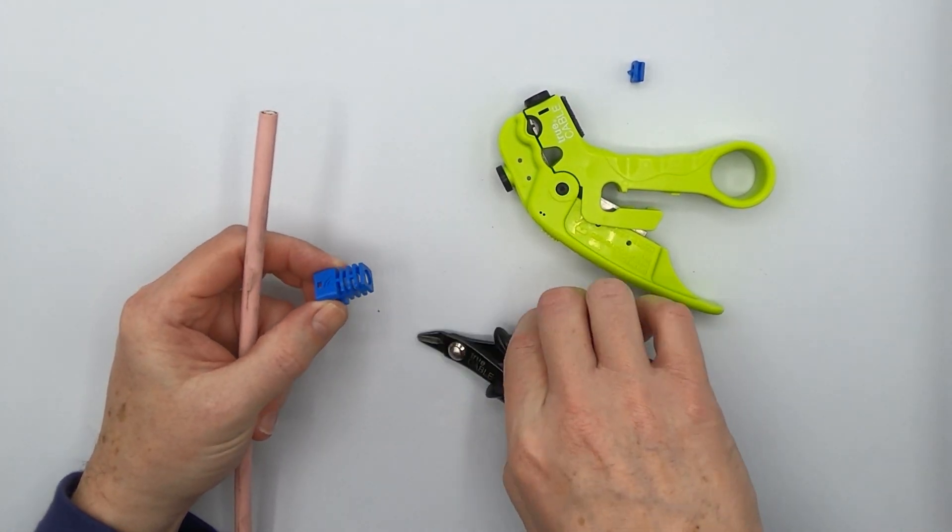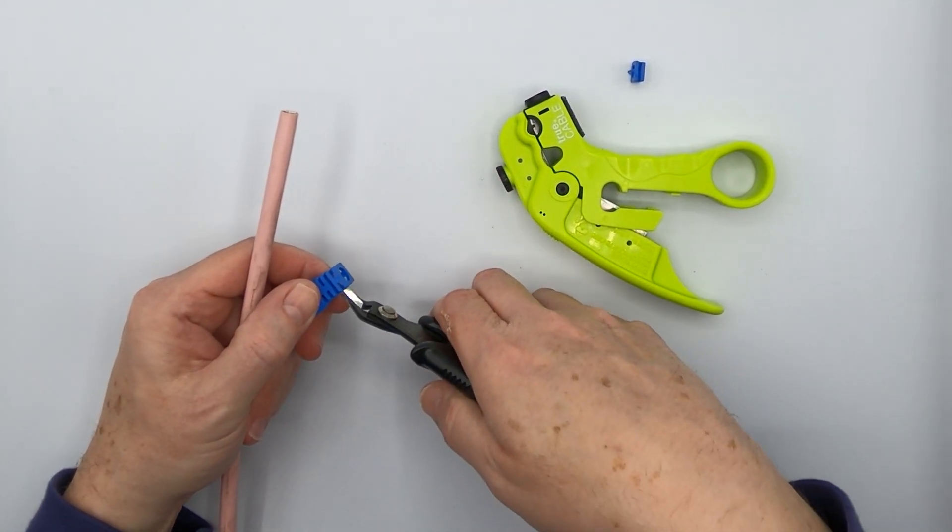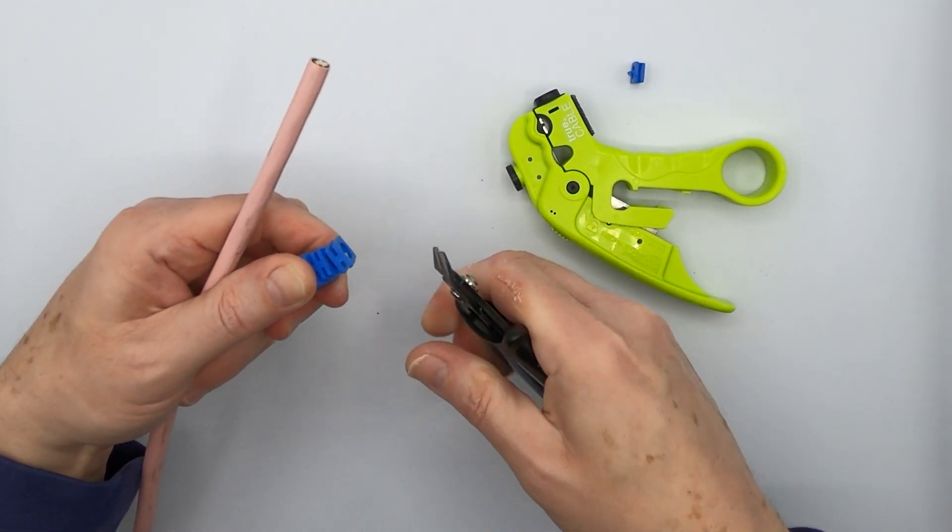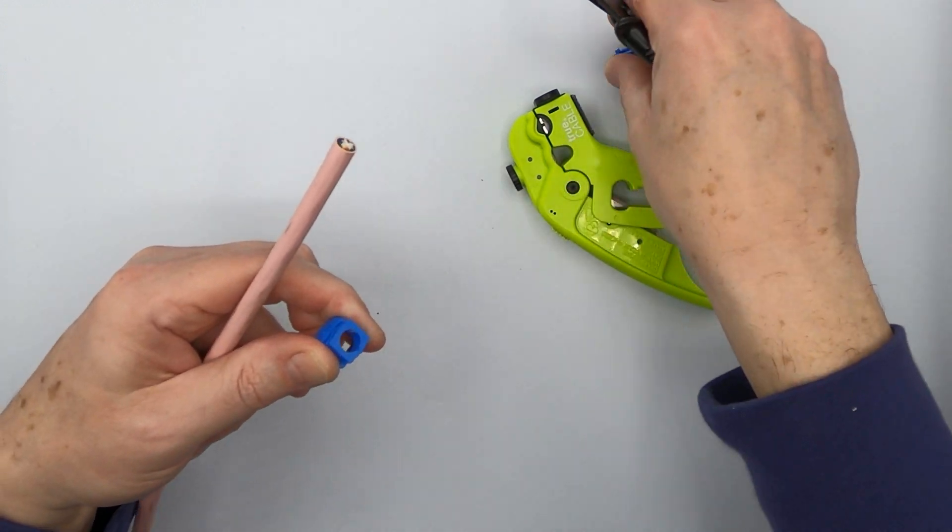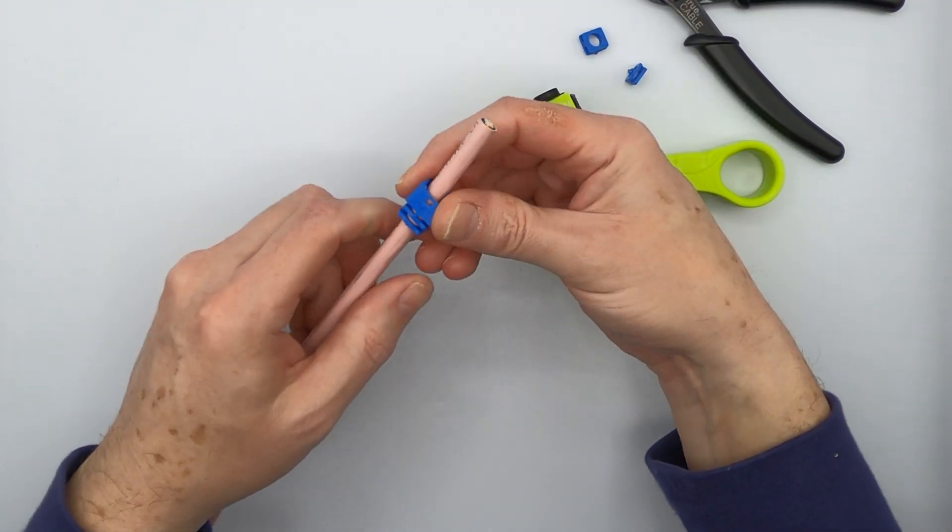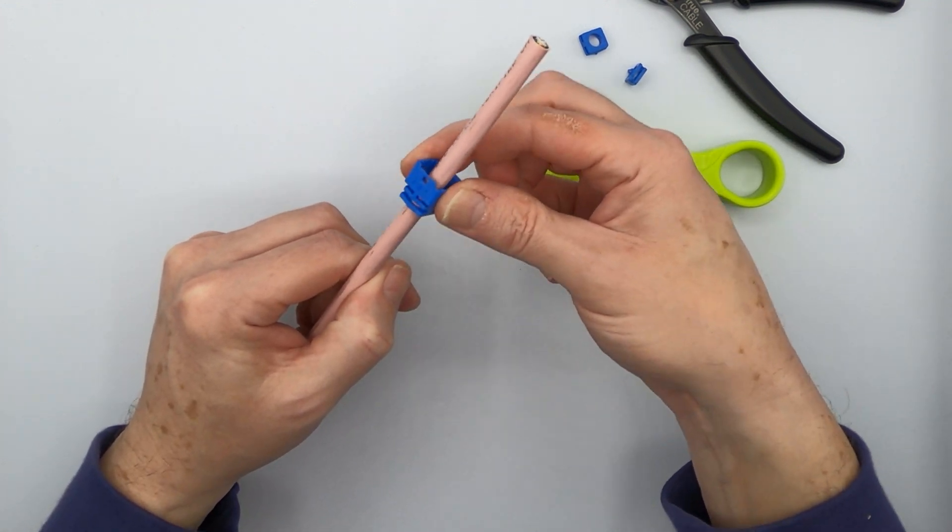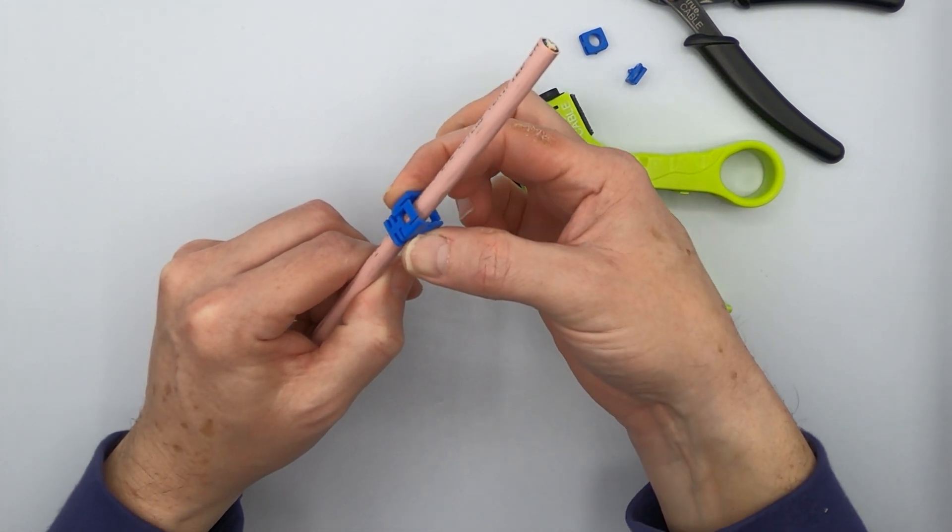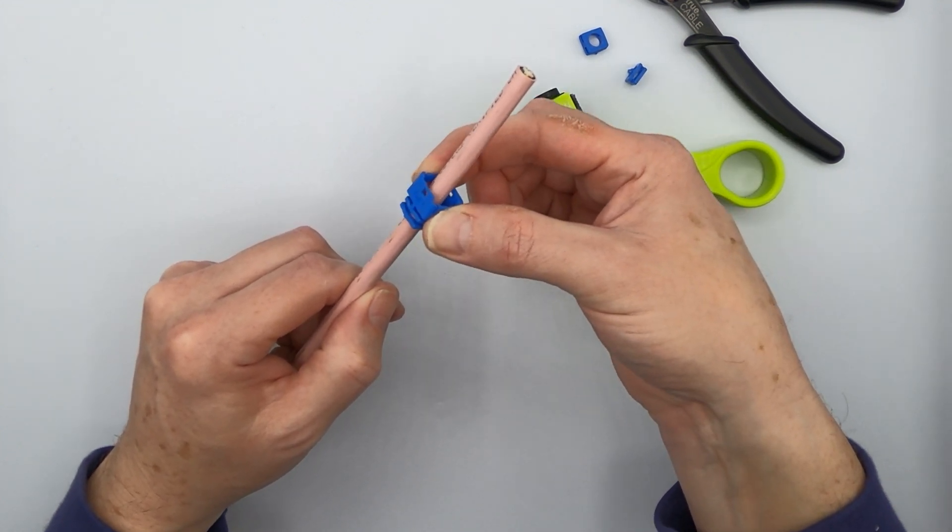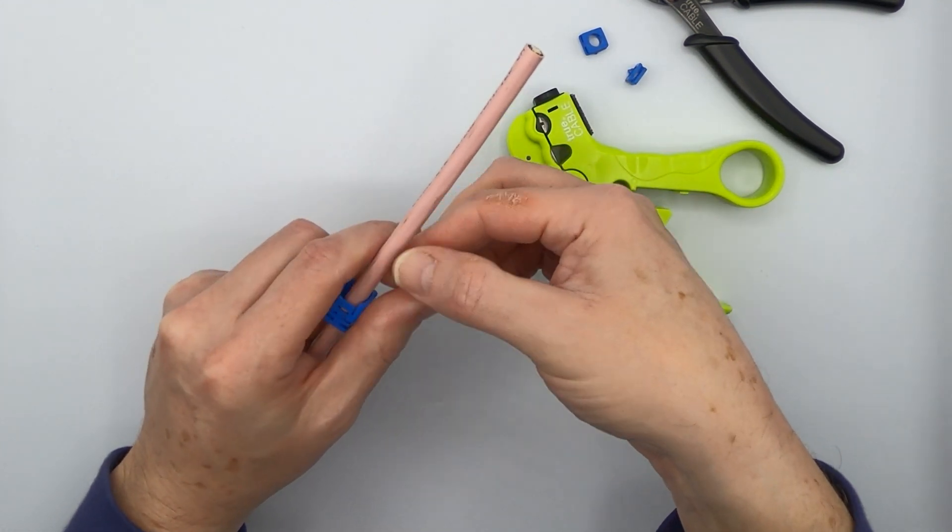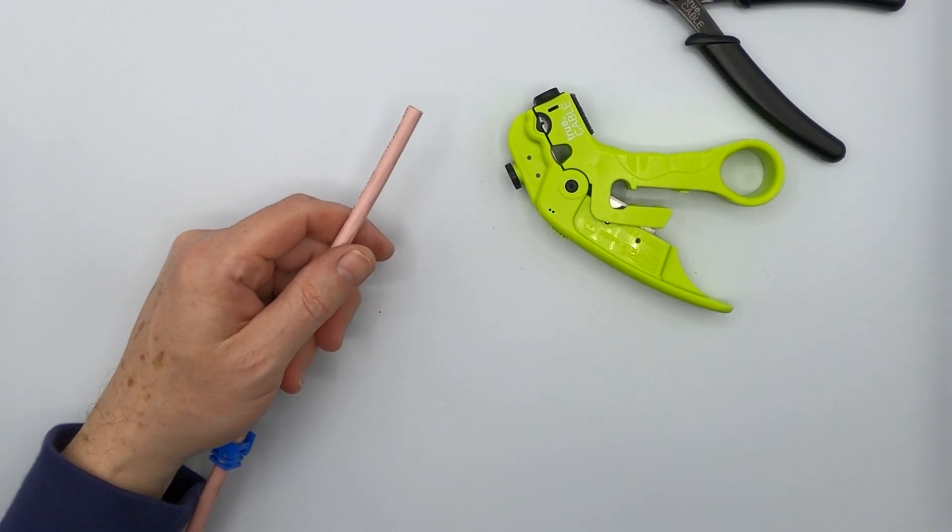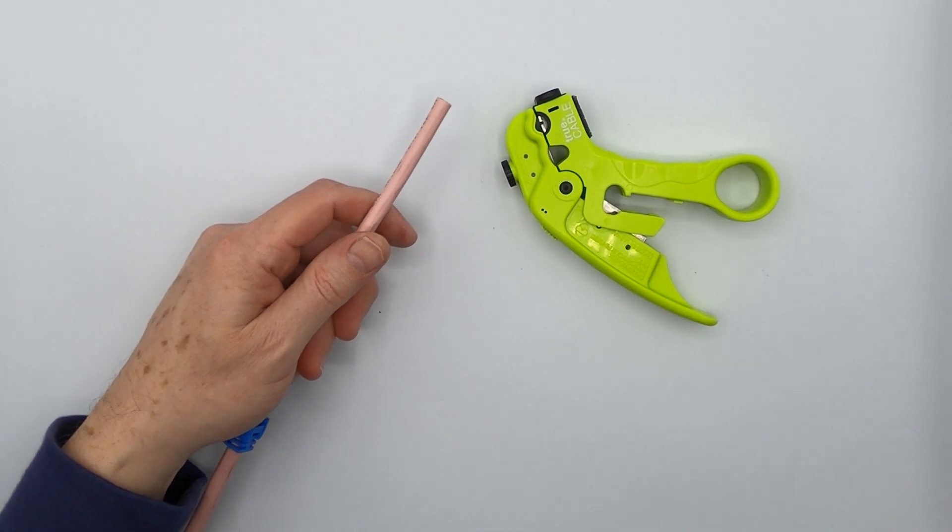So now we go ahead and snip off the next one, and I'll bet that'll work. And there we go. Make sure this is on first because this is the item that is going to allow you to lock the field termination plug closed. So slide that down, get it out of the way.